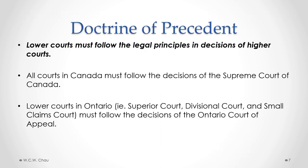The significance of having higher and lower courts is a legal doctrine called the Doctrine of Precedent. Under that doctrine, lower courts must follow the legal principles in decisions of higher courts. All courts in Canada must follow the decisions of the Supreme Court of Canada, which is the highest court in Canada. Looking at just Ontario, the lower courts — the Superior Court, Divisional Court, and Small Claims Court — all have to follow the decisions of the Ontario Court of Appeal, which is the highest court in Ontario.